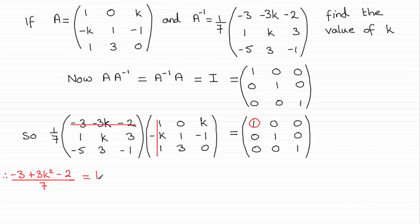So if I now simplify this by multiplying both sides by 7, adding 5, I end up with 3k squared equals 7 plus 5. In other words, 3k squared equals 12. Dividing by 3, I end up with k squared equaling 4. And taking the square root of both sides, I end up with k equaling plus or minus 2.